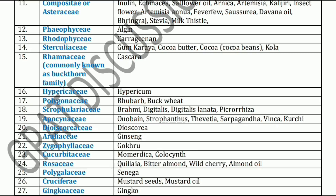Next, Scrophulariaceae family. This question is asked frequently — which of the following belongs to Scrophulariaceae family, or which family does Digitalis belong to? That is Scrophulariaceae. Scrophulariaceae family includes Brahmi, Digitalis, Digitalis lanata, and Picrorhiza. Digitalis is a cardiac glycoside.